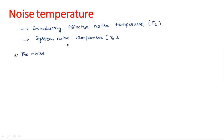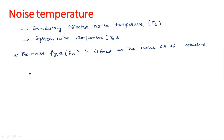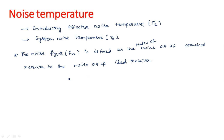The noise temperature will come from the noise figure. The noise figure Fn is defined as the ratio of noise out of a practical receiver to the noise out of an ideal receiver. So Fn equals noise out of practical receiver divided by noise out of ideal receiver.